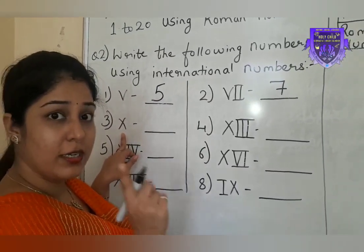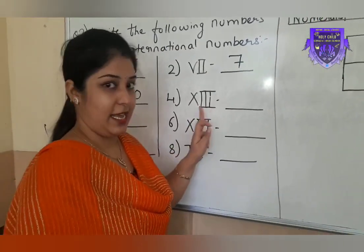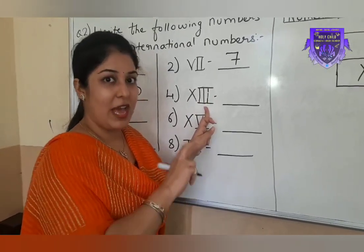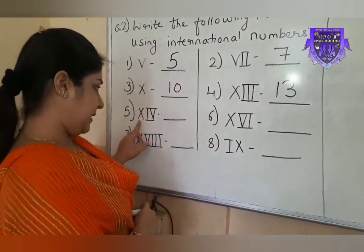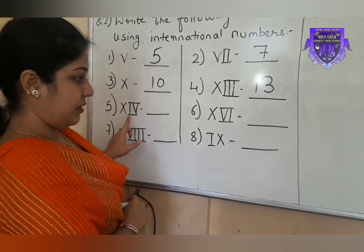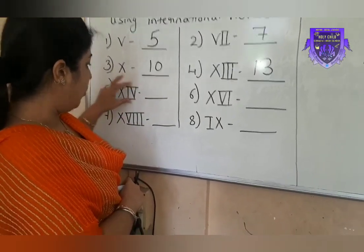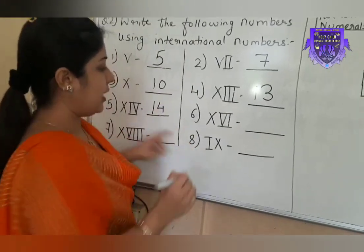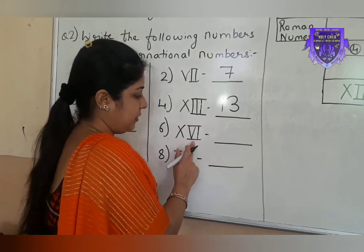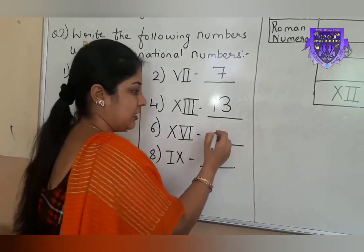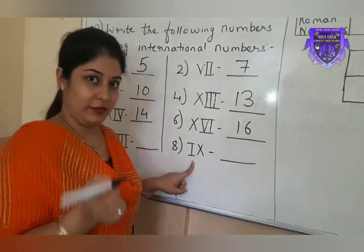The 4th one is X then three times I. X is the symbol of 10, then three times I means we have to add 10 plus 3 equals 13. Now the 5th one: X, then I, then V. I is on the left side of V, means 5 minus 1 equals 4. This is the symbol of 4. So 10 plus 4 equals 14. Then the 6th number: X, V, I. I is on the right side, means this is 5 plus 1 equals 6. 10 plus 6 gives us 16. Now, the remaining two numbers you have to do by yourself — this is your homework.